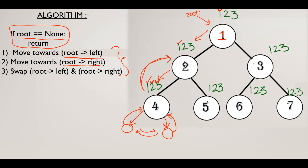It returns to the two node where we follow the second step, root.right, coming to the five node. At the five node we follow the first step, root.left — it is none. In the second step, root.right — also none. Then we swap those as per the third step, and return. After reaching the two node, it swaps root.right and root.left, so five will come on one side and four on the other. After following all three steps on the two node, it will return to the one node.